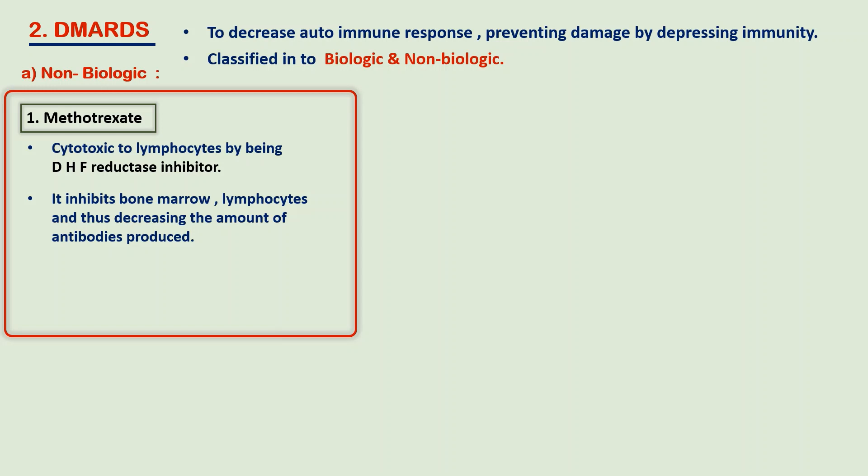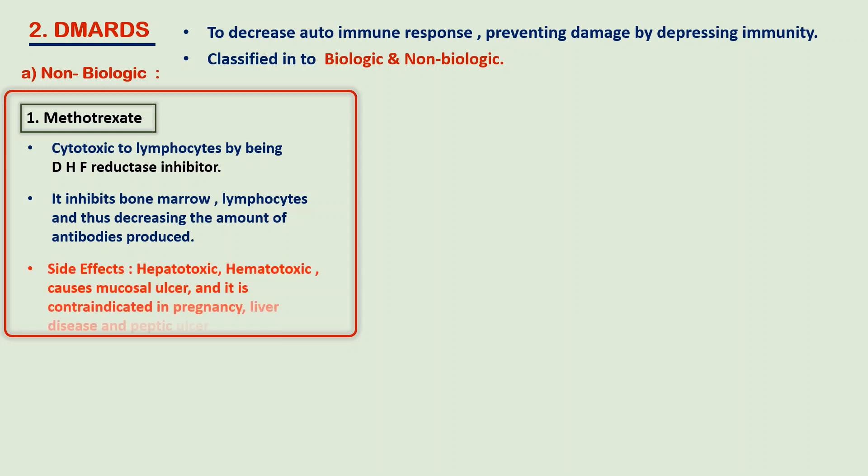The adverse drug reactions of methotrexate include hepatotoxicity, hematotoxicity, and mucosal ulceration. It is contraindicated in pregnancy, liver disease, and peptic ulcers. The side effects can be minimized by administering folic acid supplements.